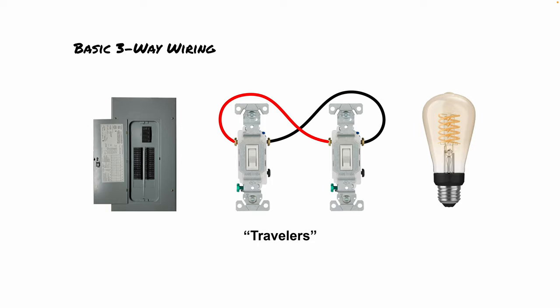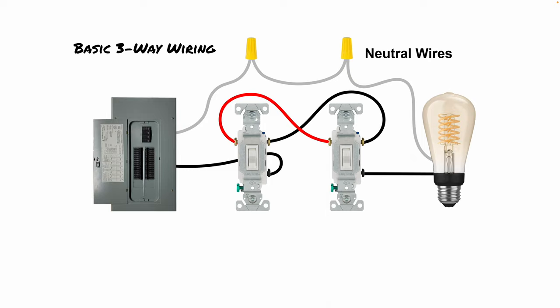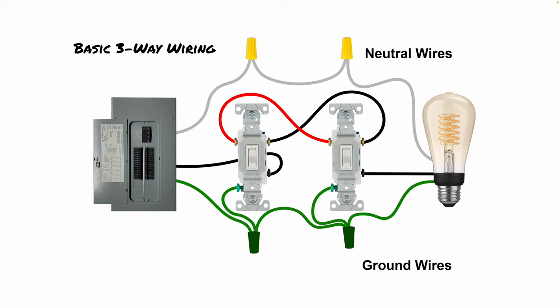With the travelers connected along with the power, you can see how the electricity flows between both switches. Now let's add the neutrals. The neutral wires are just spliced in each of these boxes to pass the neutral on to the light fixture itself. Last, we add the grounding wires. The ground wire comes from the electrical panel and is pigtailed in each of the boxes to maintain a continuous ground all the way to the light fixture and to ground each of the light switches.